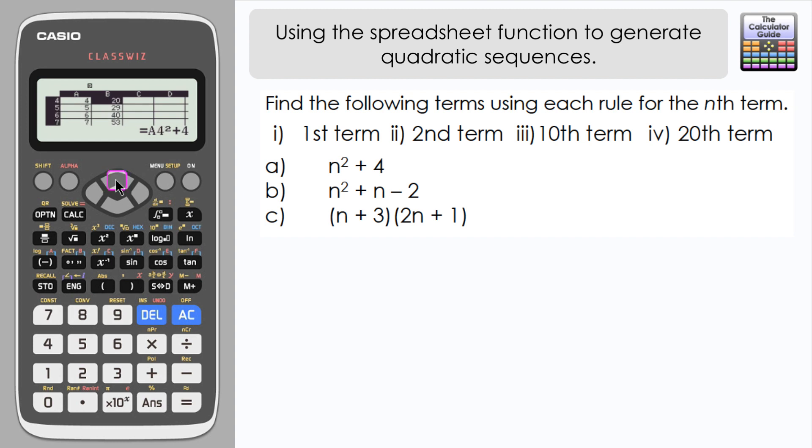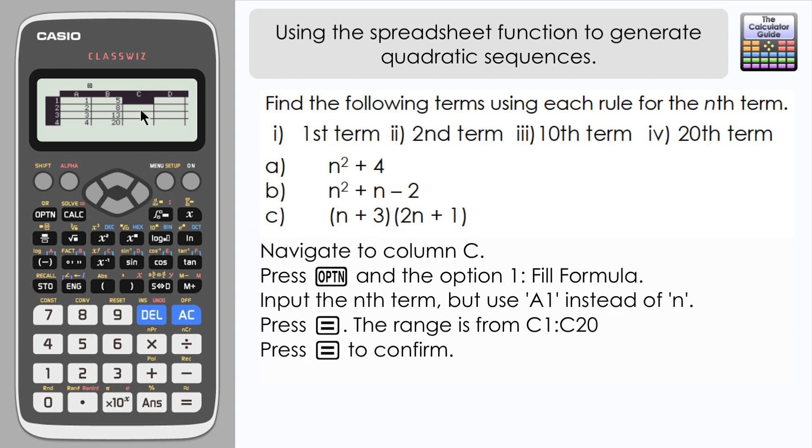So there we go, quite a quick way to generate the first 20 numbers of the sequence. I'm going to move to column C to generate the next sequence now: n squared plus n minus 2. So again I'm going to click options and fill formula. I've got my equals again.